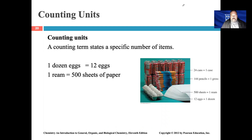If I were to say to you, go to the supermarket and buy a dozen eggs, what probably comes to mind is that you're going to the store to buy 12 eggs — because when you hear the term 'dozen' you equate that to the number 12. In terms of counting units, a counting term states a specific number of items; a dozen equates to 12.